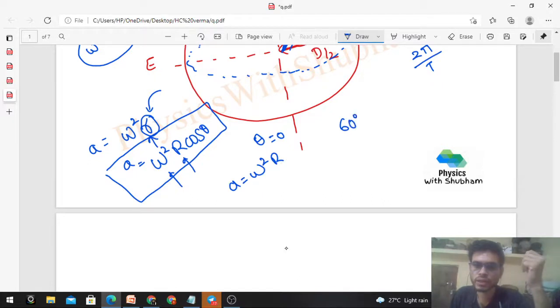If I have a particle at 60 degrees on earth's surface, then what will be the value of centripetal acceleration for that particle? You have to substitute theta equals 60 degrees, so omega square r upon two.